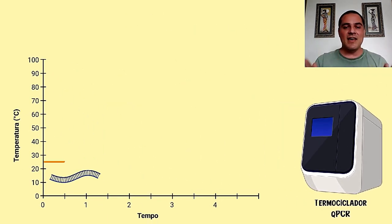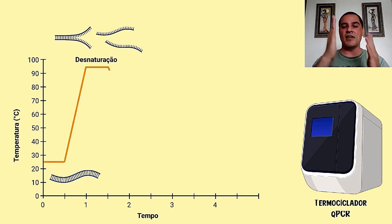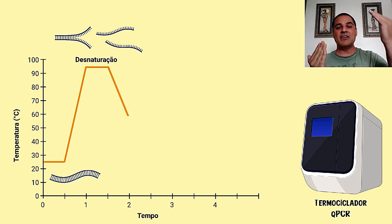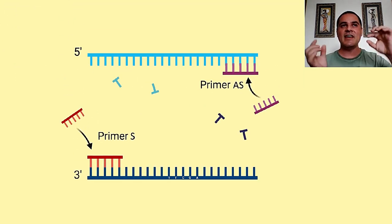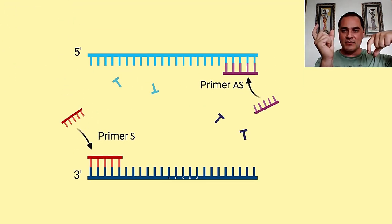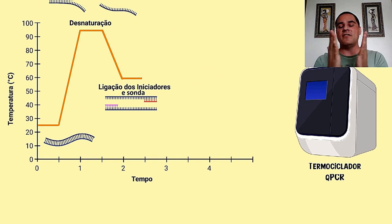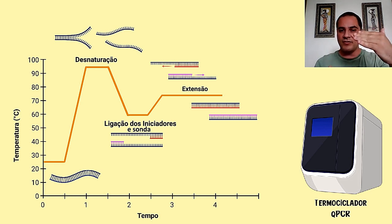Os ciclos vão ser idênticos aos da PCR clássica. A gente vai ter um ciclo a 90 graus — a gente vai aumentar a temperatura para separar as duas fitas. Vamos baixar essa temperatura para 60 graus e vai ser nesse momento que os primers vão se ligar, e também a sonda molecular, e depois uma parte de extensão a 72 graus, onde a enzima vai copiar, vai fazer uma nova fita a partir de uma fita molde.